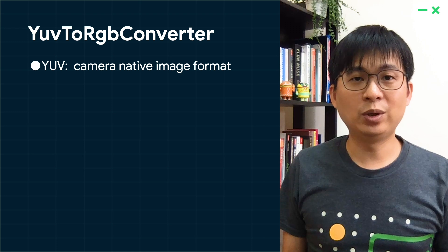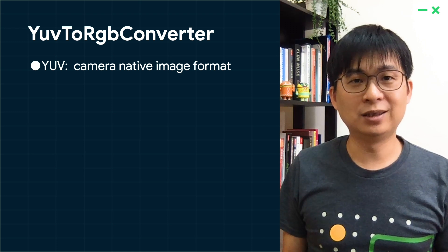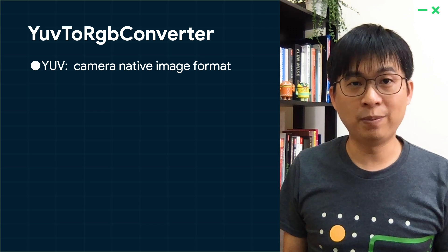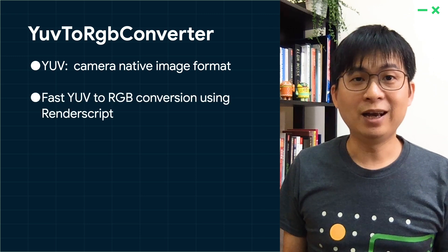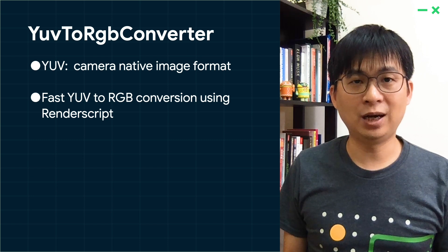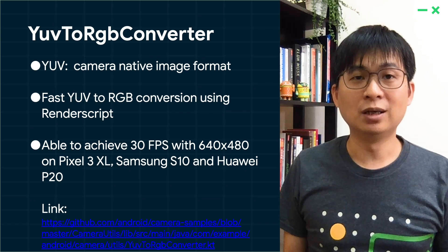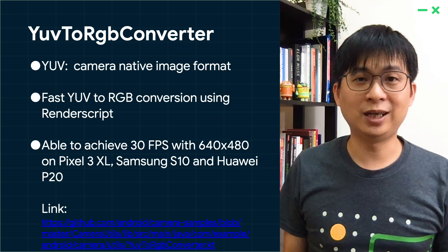The goal of image analysis is to make it super easy to integrate libraries that are great at analyzing things, such as TensorFlow Lite, ML Kit, or your own image library. Here we provide a list of sample codes that can make integration easier. First, the YUV to RGB converter. The image retrieved from image analysis is in YUV format — the native format in the Android camera system — but many libraries require the image to be in RGB format. This utility provides an easy and fast way to convert from YUV to RGB using RenderScript under the hood, so it is efficient and hardware accelerated. It achieves 30 FPS with 640x480 resolution across devices like Pixel 3 XL, Samsung S10, and Huawei P20.